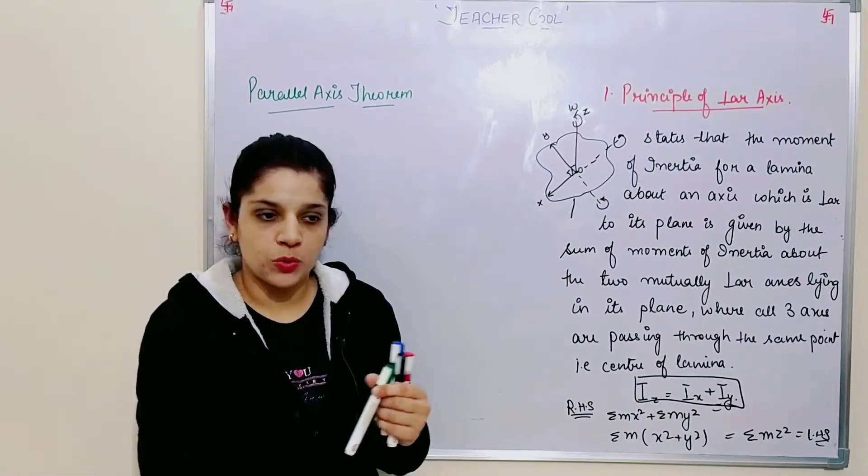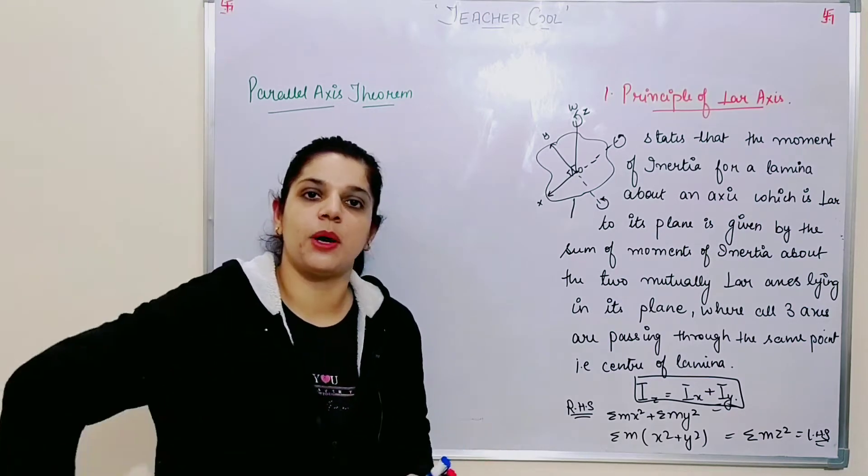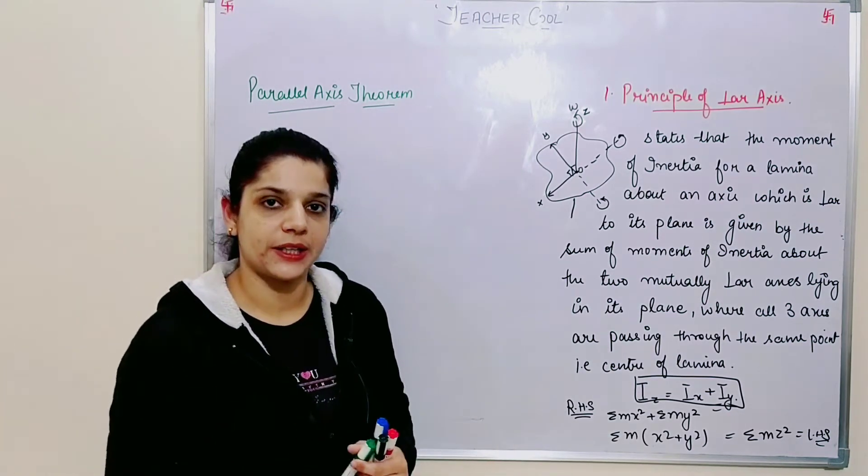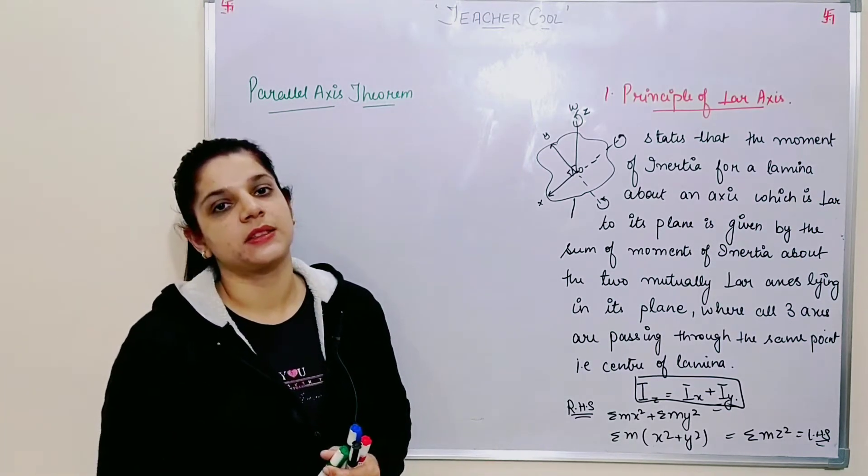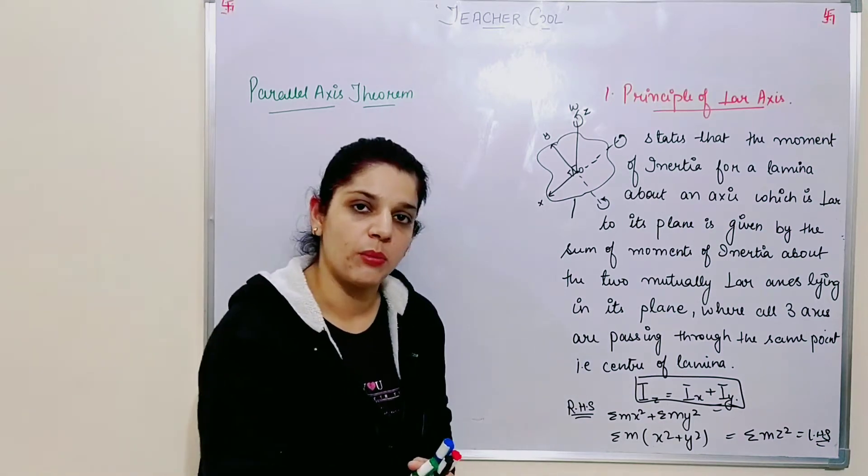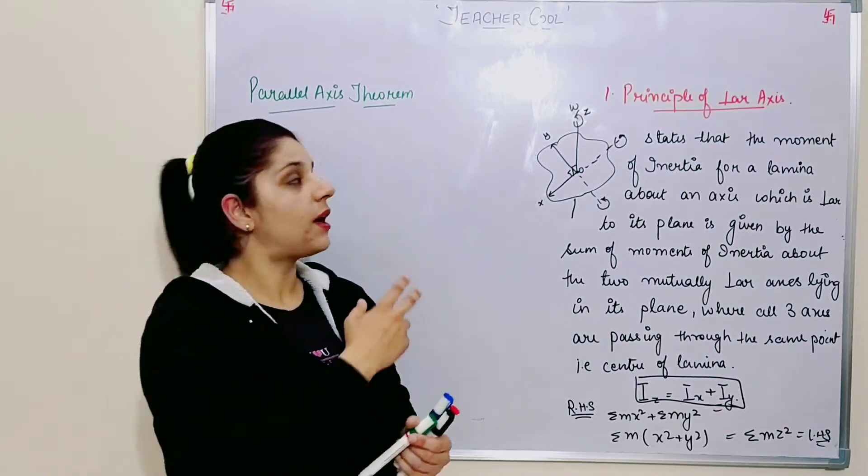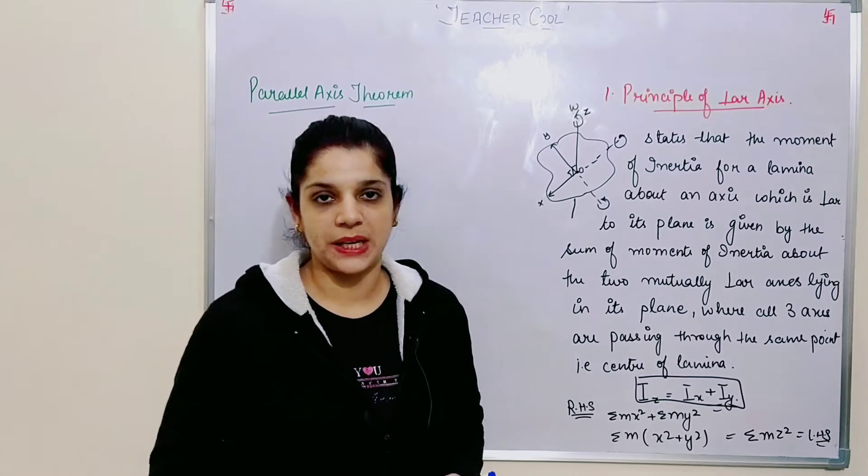Suppose there are two people standing, and I have to rotate about the second person. We are not connected, and my rotational axis is lying outside my body. In such cases, we use Parallel Axis Theorem.